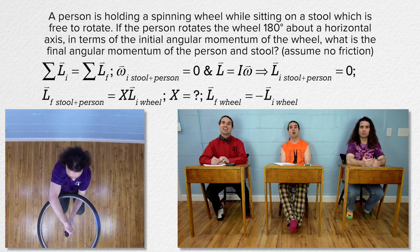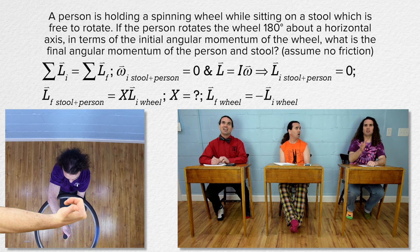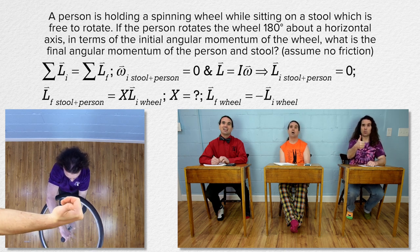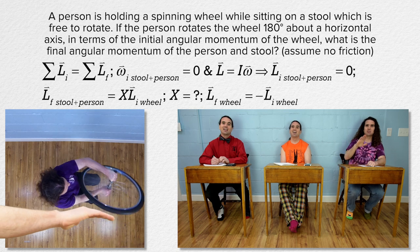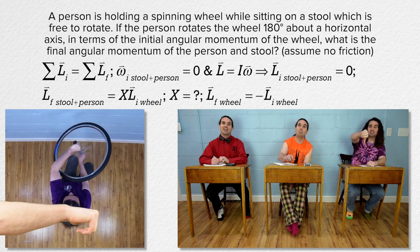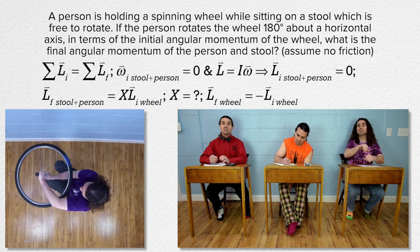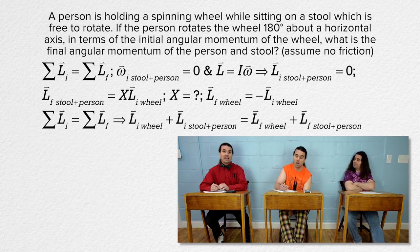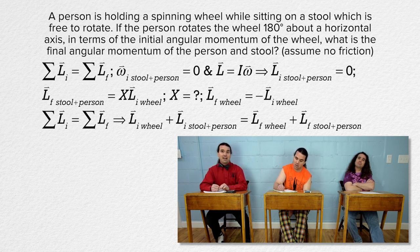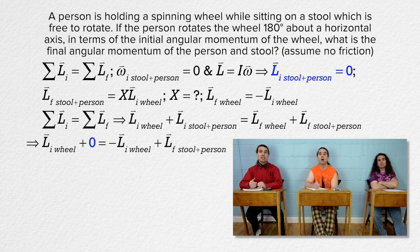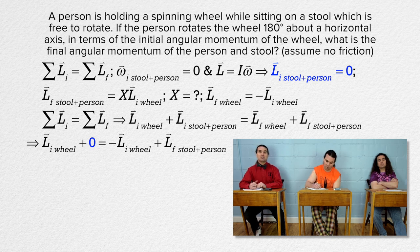So when we use the right-hand rule, you can see the wheel initially has an upward angular momentum, and after being rotated 180 degrees, the wheel has a downward angular momentum. Conservation of angular momentum means the initial angular momentum of the wheel plus the initial angular momentum of the stool and person equals the final angular momentum of the wheel plus the final angular momentum of the stool and person. The initial angular momentum of the stool and person equals zero, and the final angular momentum of the wheel equals the negative of the initial angular momentum of the wheel. Add the initial angular momentum of the wheel to both sides and voilà!